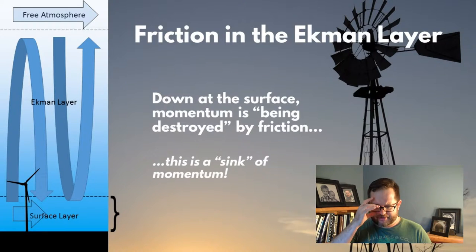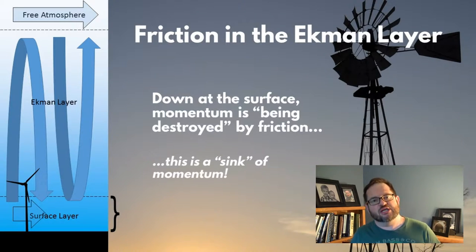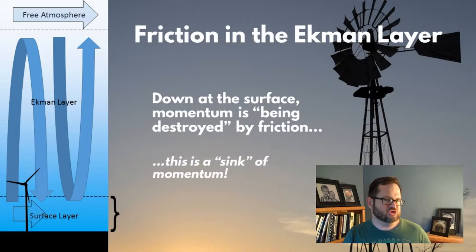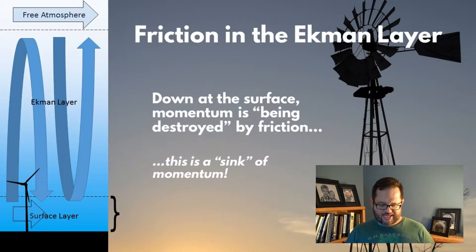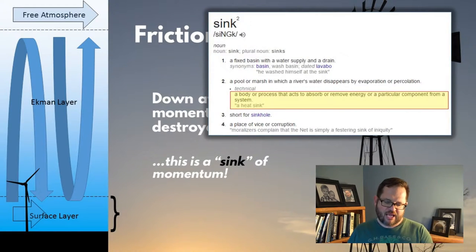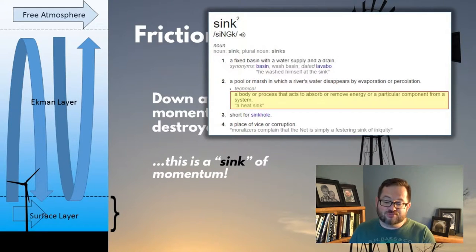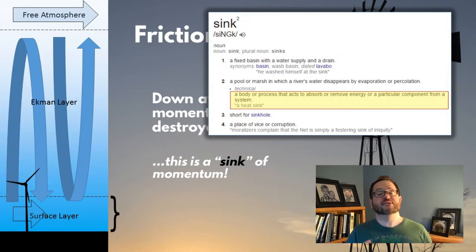Down near the surface of the earth in the surface layer, momentum is — to use the parlance of meteorology — being destroyed. Velocity is being extracted from the atmosphere by friction. The correct term for a process that removes something from the atmosphere is that it is a sink. A sink is a body or process that acts to absorb or remove energy or a particular component from a system, like a heat sink. The surface layer is a place where the momentum of the earth's atmosphere is being removed by friction.